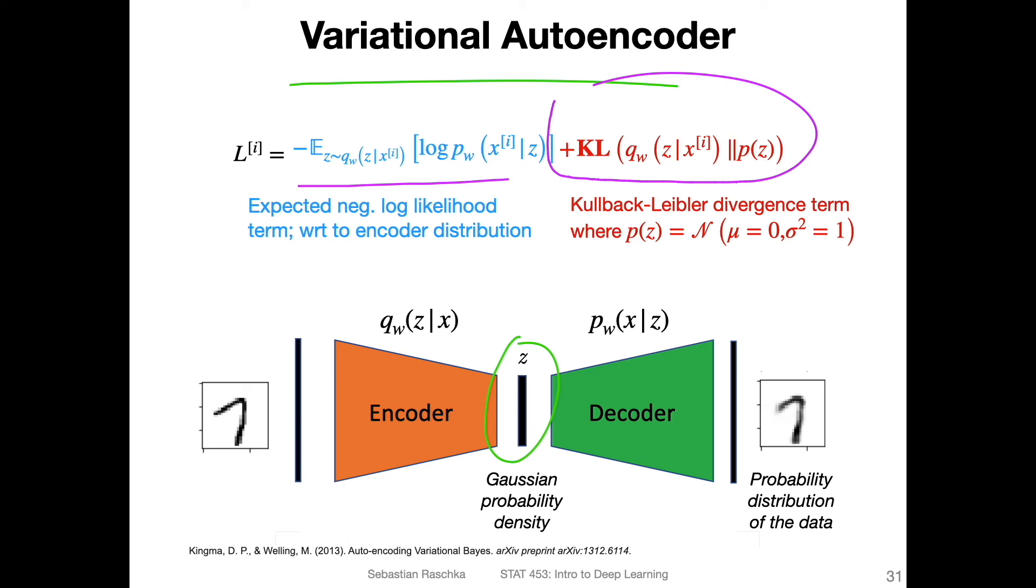We have both a reconstruction term and the KL divergence term. For the reconstruction term, we could use binary cross-entropy or negative log likelihood. However, we could also use L2 or MSE. Technically, if we want to create a good variational autoencoder, it doesn't matter. In fact, I would say L2 and MSE work even better. We will talk about this in more detail in the next lecture. The lecture is already very long, and we have a dedicated lecture for this topic, so why discuss it in one slide when I can have 30 slides?